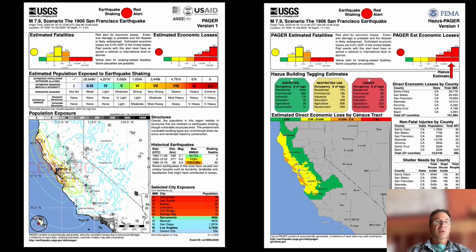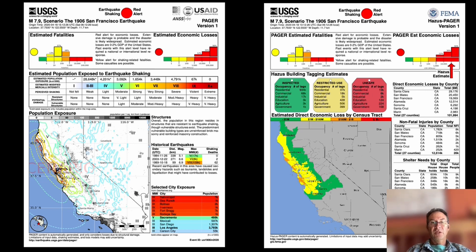If we take the 1906 earthquake as an example and repeat it, we can look at the historical intensities and see what the PAGER results would be if that earthquake happened today. We also have a new tool called the Two-Pager, developed collaboratively with FEMA using Hazus — combining PAGER and Hazus to get more granular loss estimates at the county and census tract level, summarized in a simple format.